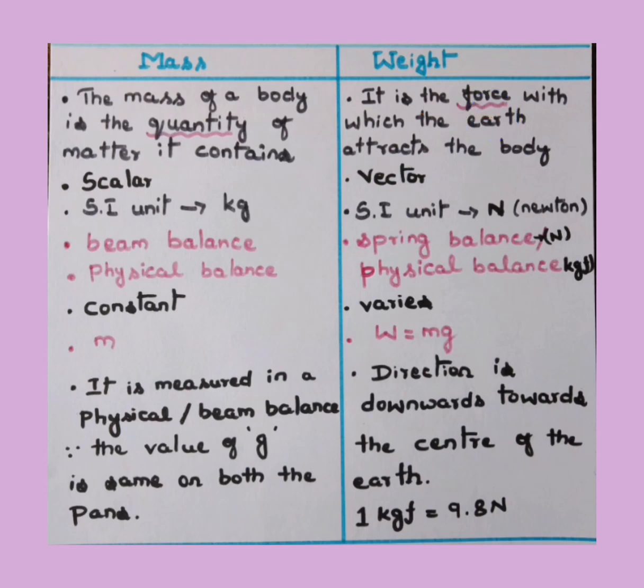Weight is the force with which the earth attracts the body towards it. Mass is a scalar quantity, weight is a vector quantity. It says about the direction in which the earth attracts, whether it is downward or upward. So weight is a vector quantity, mass is a scalar quantity. SI unit of mass is kilogram, SI unit of weight is newton.